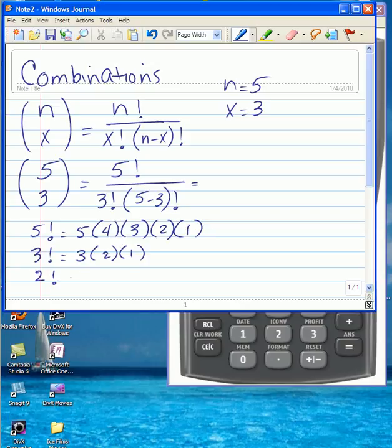And 2 factorial, which is the 5 minus 3 in the denominator, is 2, so we need to compute 2 factorial, which equals 2 times 1. Now these answers would be 120 and 2.